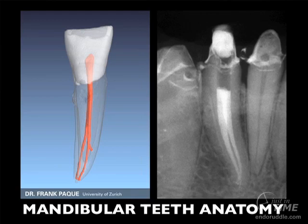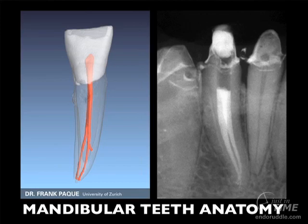The first step would be diagnostics. The second step would be complete access. The third step would be glide path management. And once we have a secured canal — one that has a reproducible and smooth glide path — then we can shape that canal. Shaping allows us to get more reagents into the critical areas, and we can activate these reagents and move them into the deep lateral anatomy. Following disinfection, if we've done everything properly, we would fill a root canal system. That is the rationale for treatment.